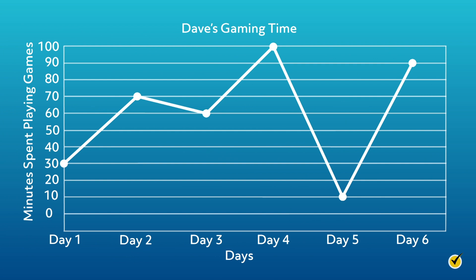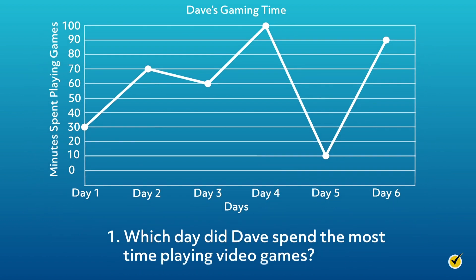Let's look at another line graph together. This graph shows how much time Dave spent playing video games each day. The horizontal x-axis shows the independent variable, which is days, and the vertical y-axis shows the dependent variable, which is minutes spent playing games. Each marker shows the data point for how many minutes of video games Dave plays each day. Let's use this information to answer some questions. Which day did Dave spend the most time playing video games? Dave spent the most time playing video games on day 4. We know this because the marker for day 4 is higher than the markers for the rest of the days shown. On day 4, Dave played games for 100 minutes.